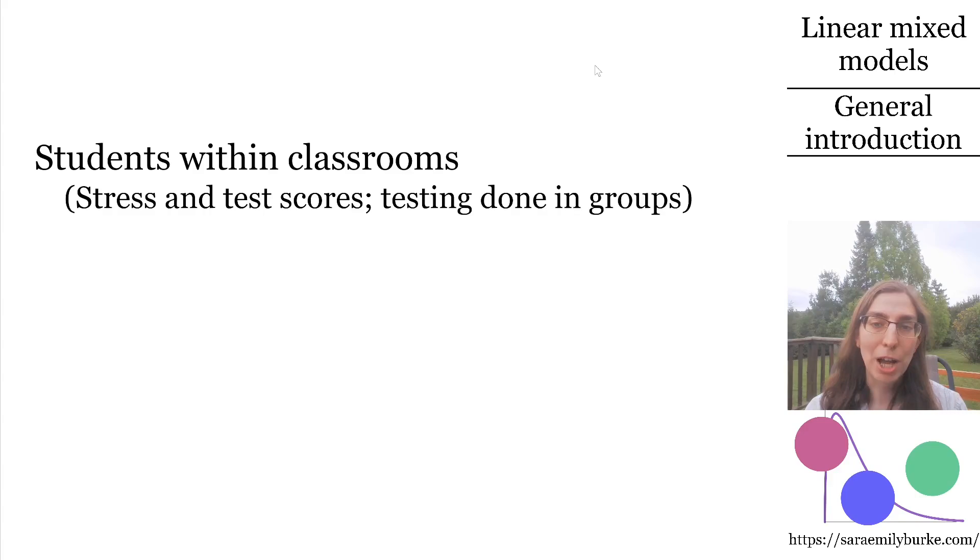Let's think about four examples of how observations can be grouped in research designs. Suppose you're interested in the relationship between stress and test scores for students, so you carry out some testing sessions in six classrooms at a school, with 25 students per classroom, for a total of 150 participants.